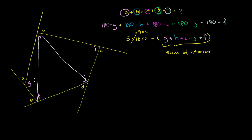G is already one of the angles in a triangle. F is made up of two angles in a triangle — F is this entire angle. So let's say F equals K plus L, the sum of two adjacent angles. Similarly, J is also a combined angle — J equals M plus N.